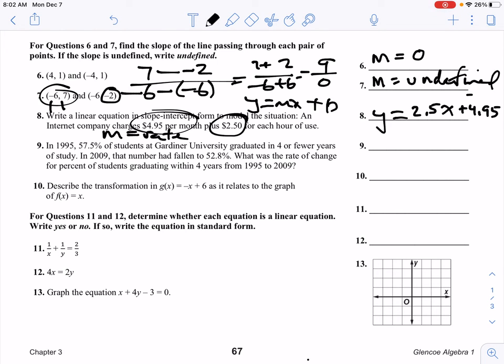Number nine: In 1995, 57.5% of students at Gardner University graduated in four or fewer years of study. In 2009, that number had fallen to 52.8%. What was the rate of change for percent of students graduating within four years from 95 to 2009? The big thing in this is this is a slope problem. Rate of change is slope.